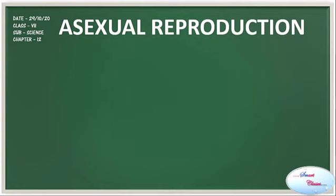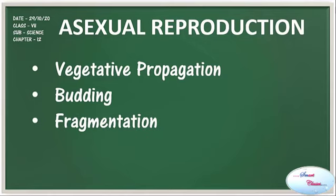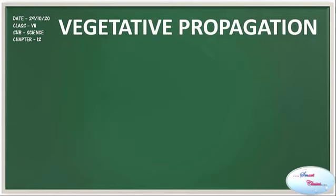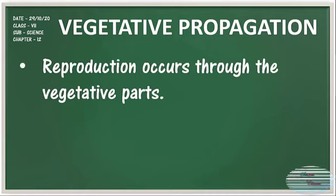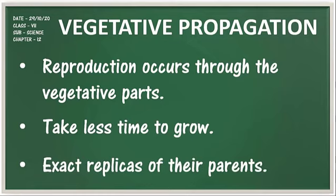Let's discuss the modes of asexual reproduction. They are vegetative propagation, budding, fragmentation and spore formation. Vegetative propagation is a type of asexual reproduction. As the name suggests, reproduction occurs through the vegetative parts of the plant, such as stems, leaves, buds and roots. These plants take less time to grow and are exact replicas of their parents as they are produced from a single parent.